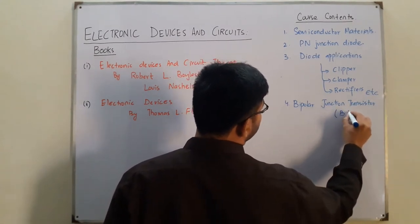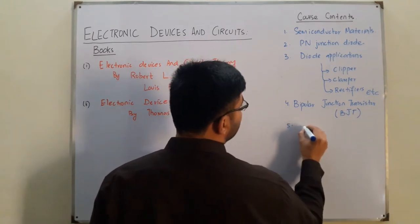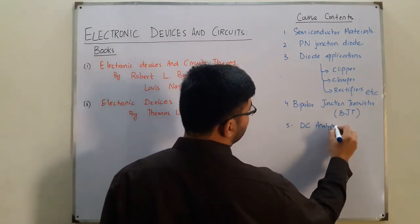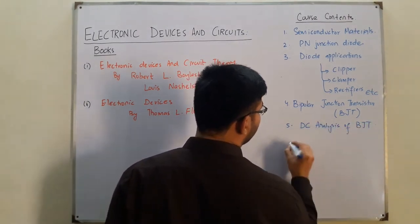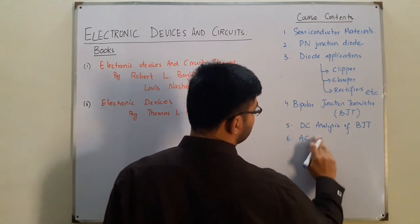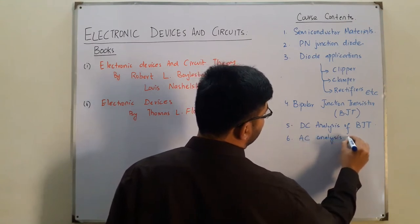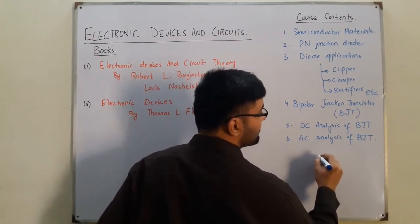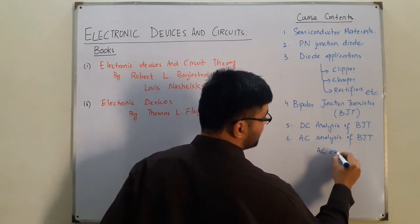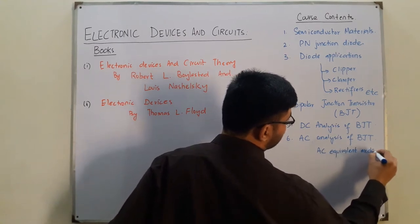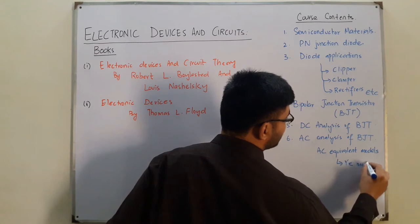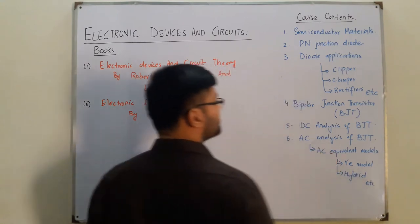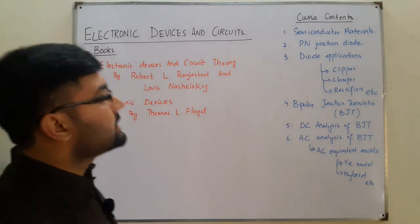Then we move into the Bipolar Junction Transistor, called a BJT. We apply signals to it — first the DC analysis of BJT when a DC signal is applied, and finally the AC analysis of BJT. In this AC analysis we will have AC equivalent models of BJT, such as the re model and the hybrid model.